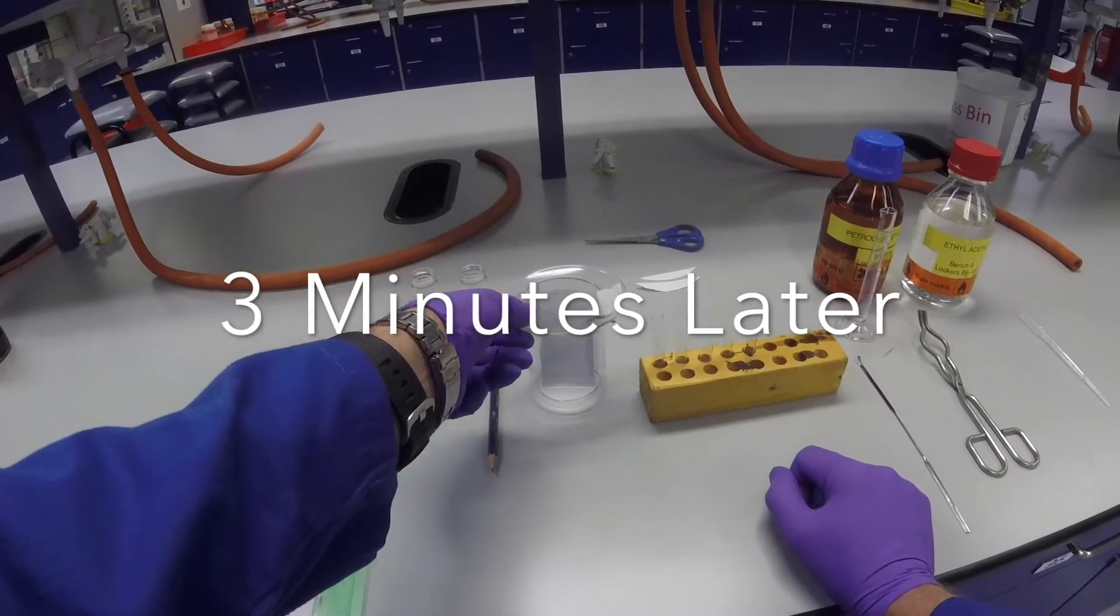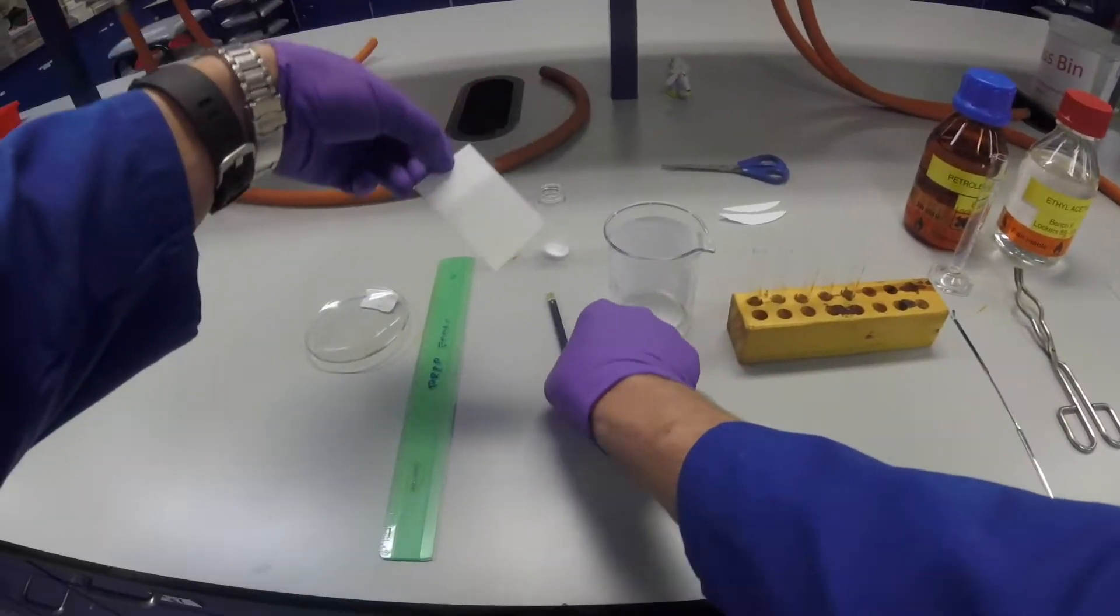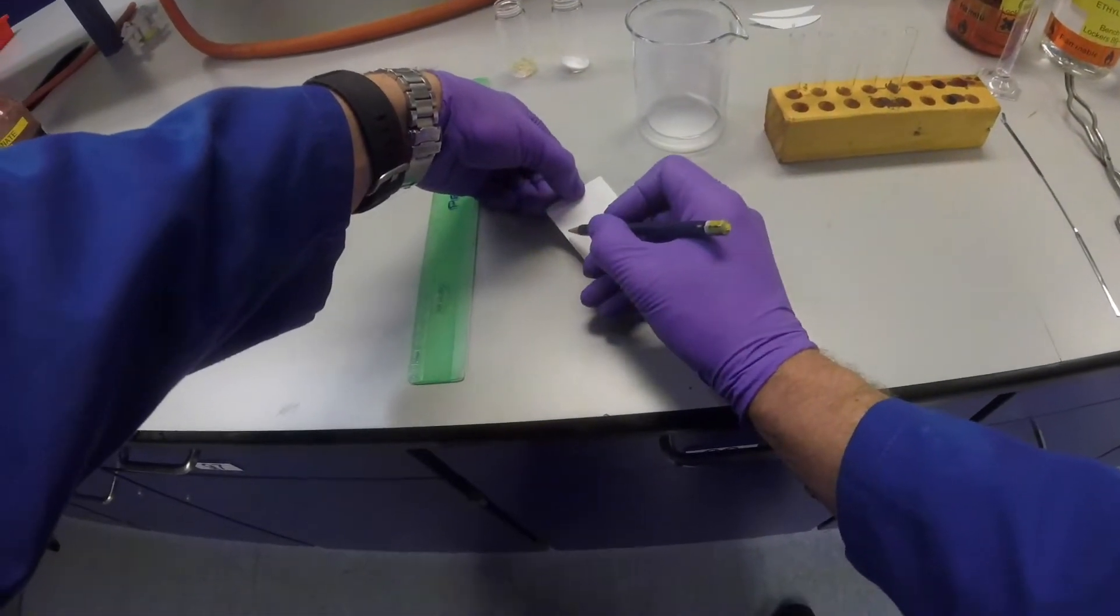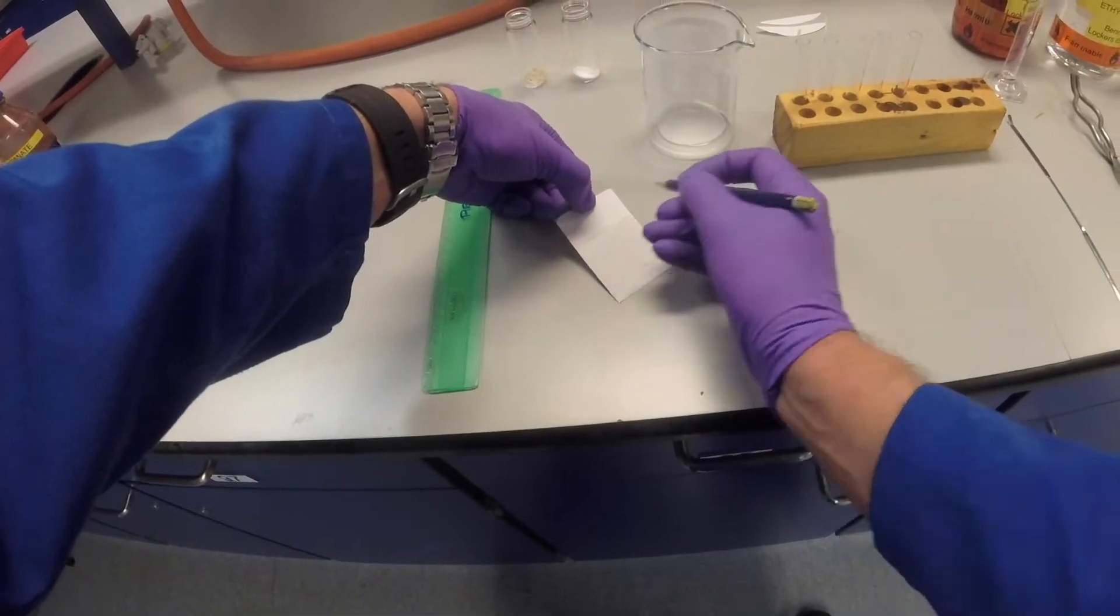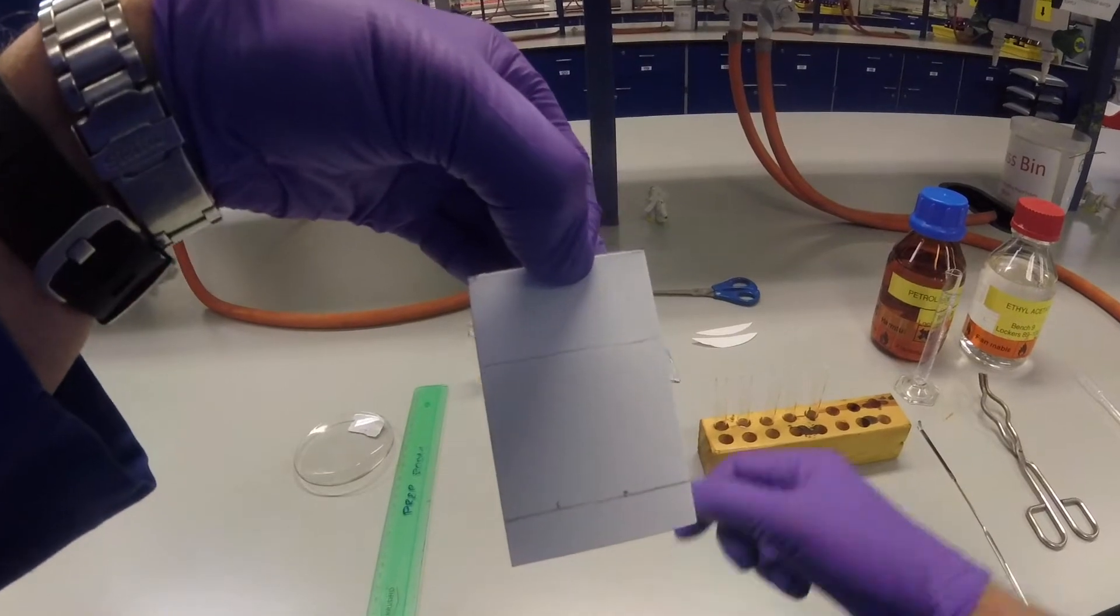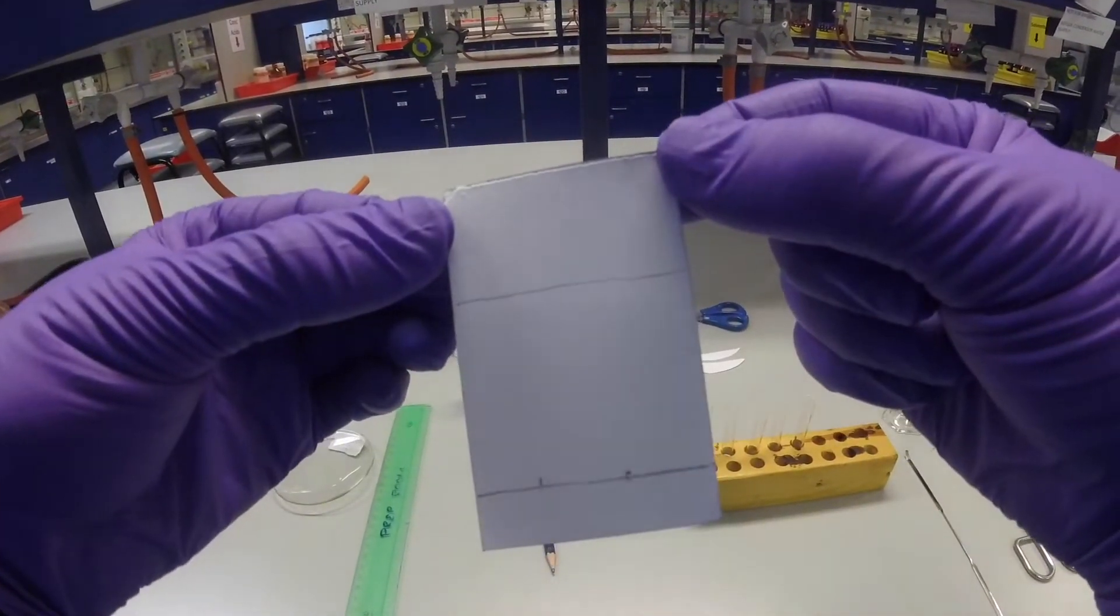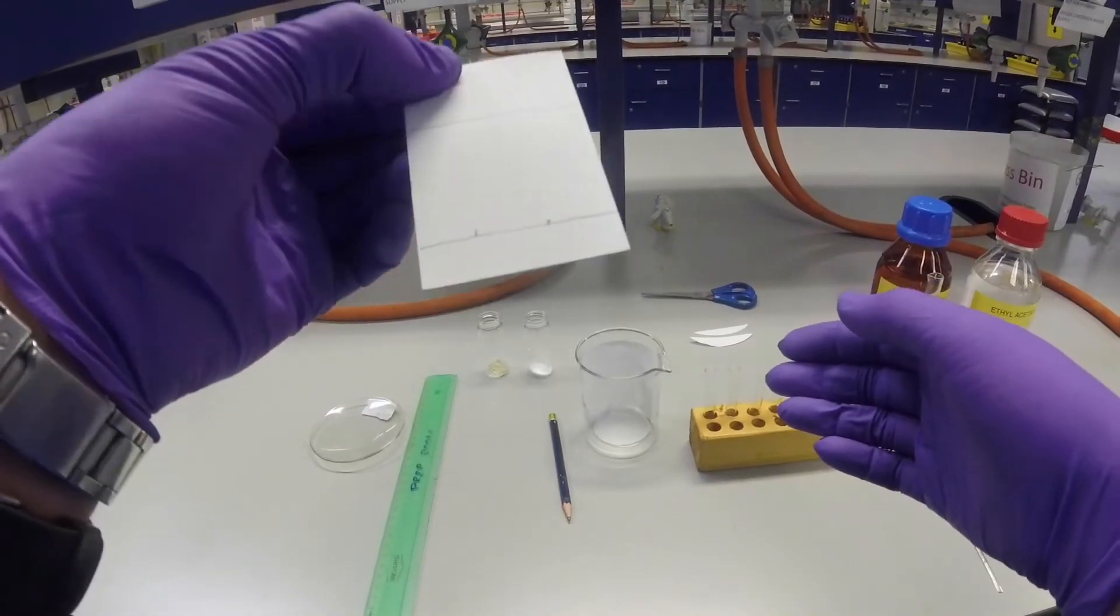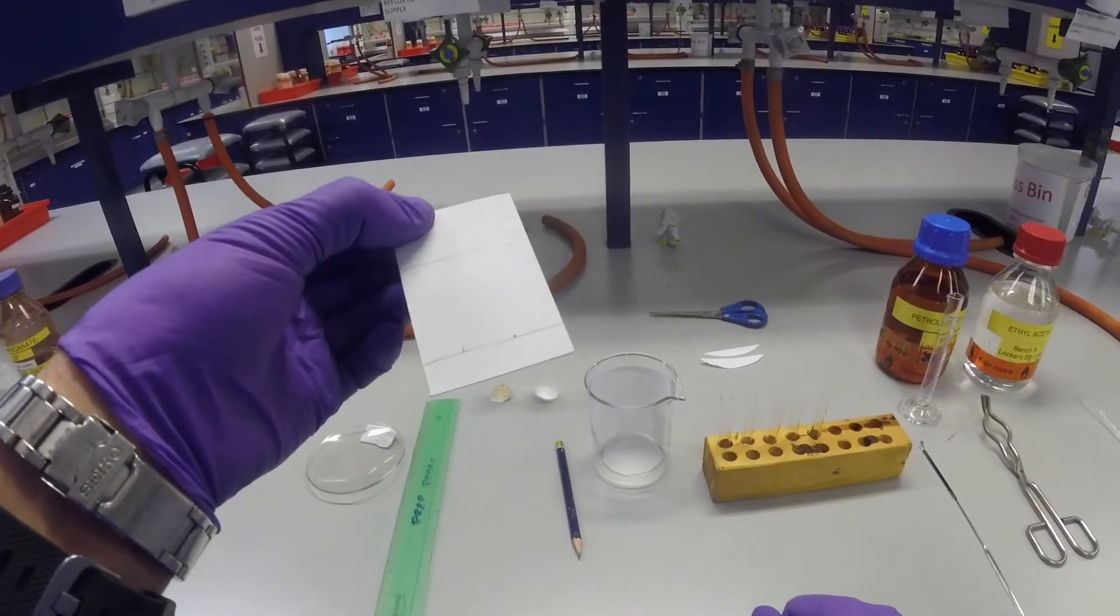I'm going to stop the TLC now. Take the top off, reach in, take it out, and very quickly draw a line where the solvent got to. That's a pencil line marking off the limit for where the solvent reached on that plate. We're going to allow it to dry now to make sure all the solvent's evaporated.